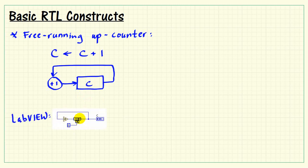In LabVIEW, this is very straightforward. We use a feedback node for the register C, and then we use the increment node, that is the plus one, as the operator to increment C by one. Here I'm initializing the register to zero.